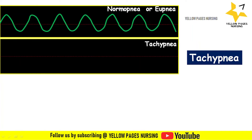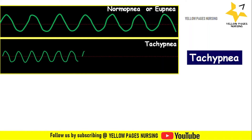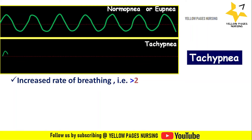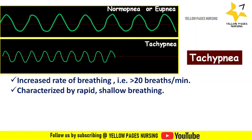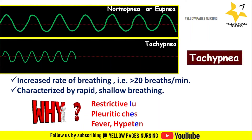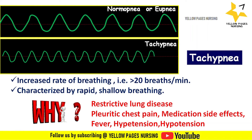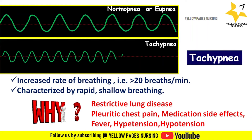Next comes tachypnea. Comparing the graphical patterns, the curves in tachypnea are narrower compared to normopnea. Tachypnea is an increased rate of breathing — more than 20 breaths per minute — characterized by rapid, shallow breathing. Causes include restrictive lung disease, pleuritic chest pain, medication side effects, fever, and hypertension.